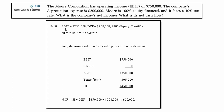We know that EBIT — earnings before interest and taxes — is $750,000, depreciation is $200,000, it's 100% equity financed, and the tax rate is 40%. We don't know net income, we don't know net cash flow, and we don't know operating cash flows.